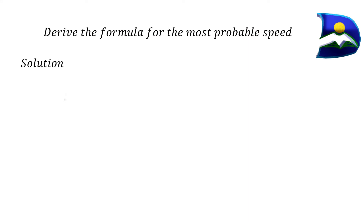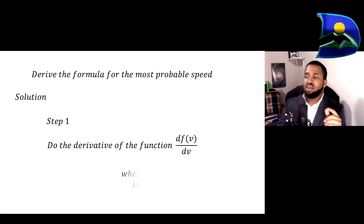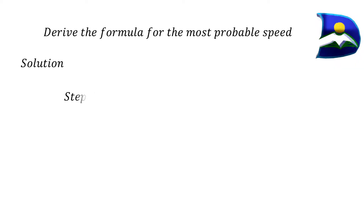In our previous video we talked about the root mean squared speed and deriving the mean speed. In this video we're going to look at how to determine the most probable speed of molecules in a gas. These variables depend mainly on temperature and the molecular mass of that particular molecule. Our goal is to derive the formula for the most probable speed. Step one is to take the derivative of the function f(v), where f(v) is the fraction of molecules in a gas with a specific speed.